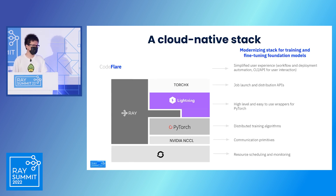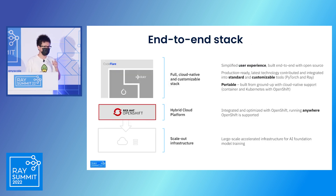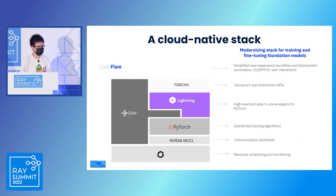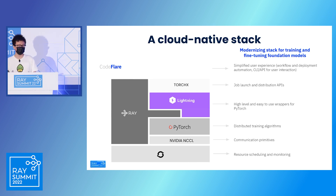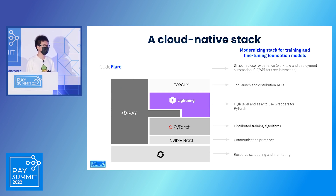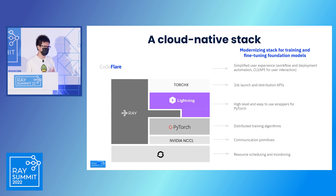This is a zoomed-in version of the upper part of that stack. At the core, we've been leveraging Ray and Torch. We leverage the Torch portfolio to do everything that is training-specific. And we've been leveraging Ray, specifically Ray Workflow, to do anything that is pre-training and post-training — for example, after fine-tuning, how do we do evaluation.